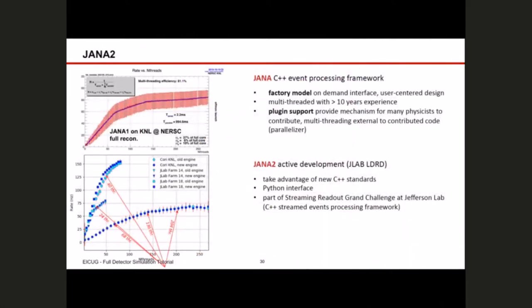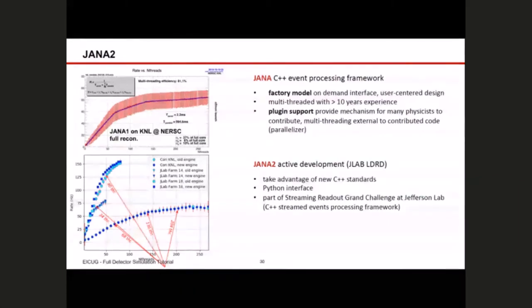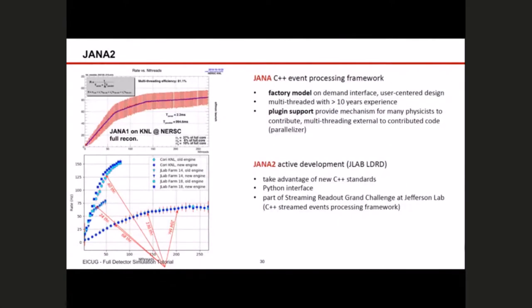For JANA2: this is a C++ event processing framework with a factory model and demand interface — a very nice user-centered design. It is multi-threaded with more than 10 years of experience, and has plug-in support providing mechanisms for many contributors. JANA has been used as a parallelizer of existing software, for instance in a simulation called Argon put together for the EIC. It is currently going to its next revision with active development for JANA2 — motivated by advances in C++, a Python interface, and connection to streaming readout work at Jefferson Lab.